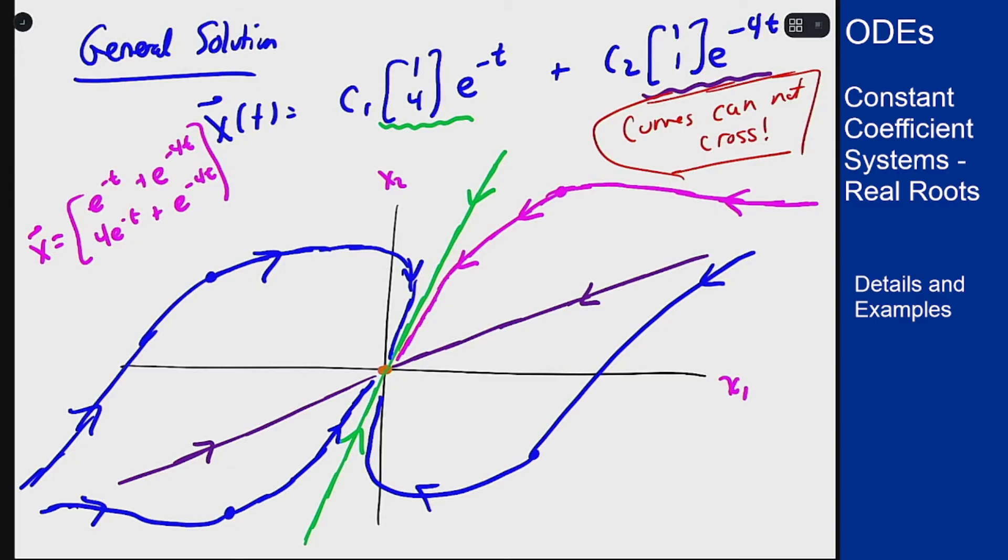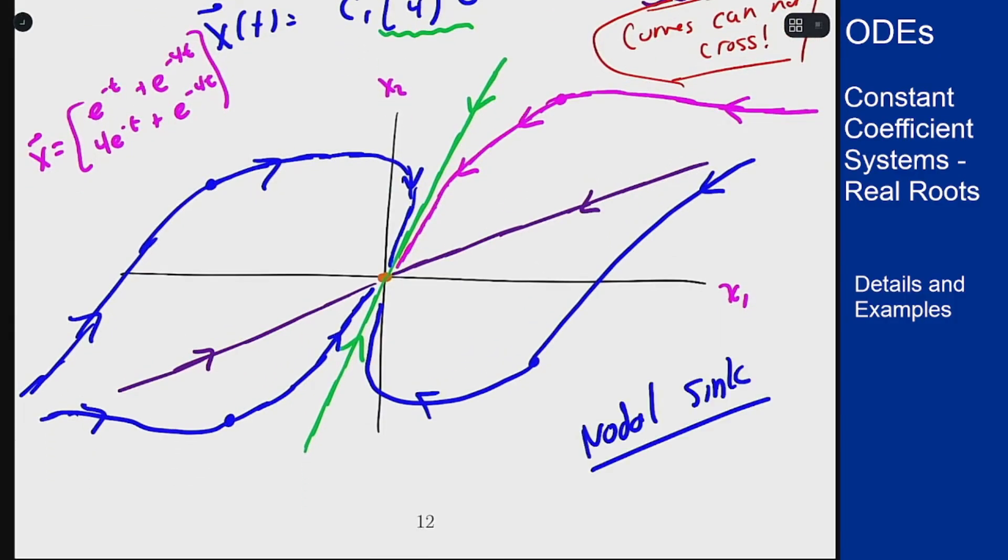We'll talk about the terms later but this is called a nodal sink for this situation because everything flows in. It's a sink, everything flows down the drain in the middle, and it works like a node. That'll contrast what we see for complex next time.